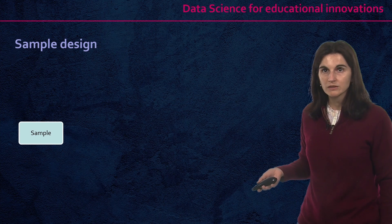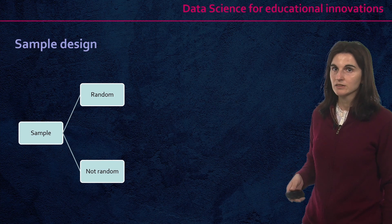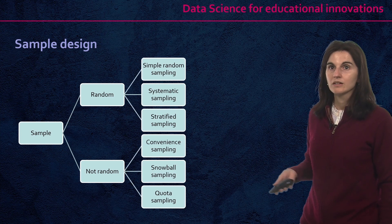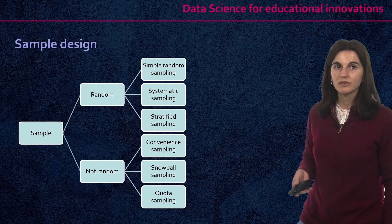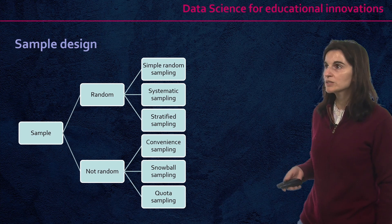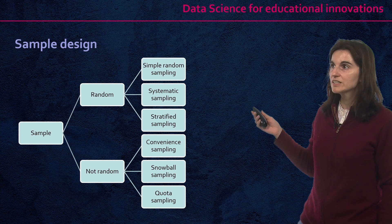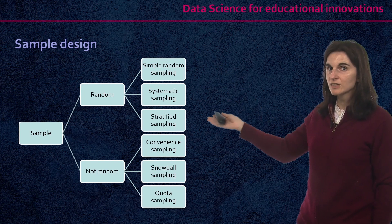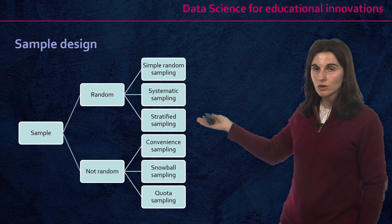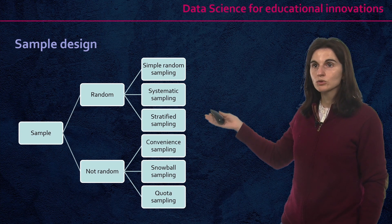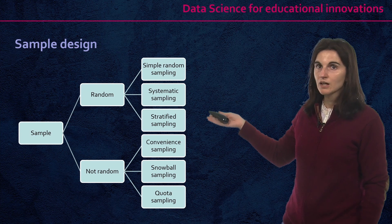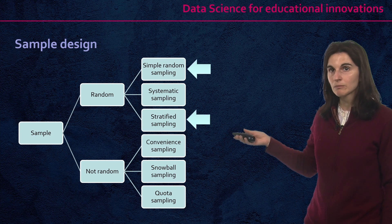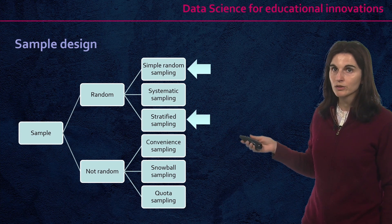When we refer to sampling design, there are two types: we have the random design and the non-random design. Across all different types of random sampling design, we may use simple random sampling, where each student has the same probability to be selected as any other, or we could consider stratified sampling, where we define strata or groups of students where we want to guarantee that these groups are properly represented in the sample. These two types of sample design are quite recommendable for educational studies.